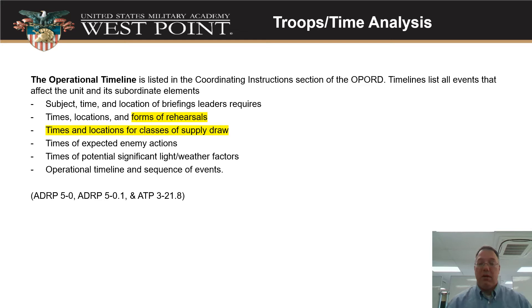Then you've got enemy actions — anything you know about them — to keep track of, as well as your actions against the enemy and when you think they're going to happen. Times of significant weather you want to list out in your timeline: maybe rain showers predicted to come in around 5 PM, and when rain is expected to lift. Then your operational timeline sequence of events: when are you going to LD, when do you expect to arrive at the ORP, when are you taking a rest break, when do you plan the leaders' recon, when are you crossing a phase line to move into attack and support-by-fire positions, when do you initiate the attack, and when do you think you'll be meeting trucks to load up and ride back to the next assembly area for follow-on missions.